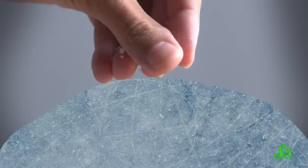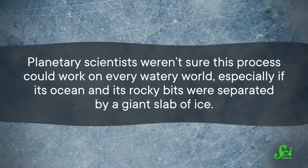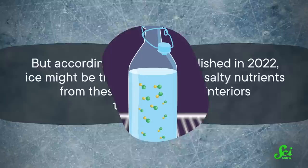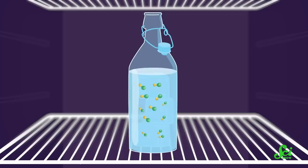Planetary scientists weren't sure this process could work on every watery world, especially if its ocean and its rocky bits are separated by a giant slab of ice. But according to a paper published in 2022, ice might be the key to moving salty nutrients from these planets' rocky interiors to their oceans. Now on Earth, we don't have salty ice. Even when saltwater freezes, the salt gets kicked out as the ice crystals form, and you end up with ice made of fresh water.